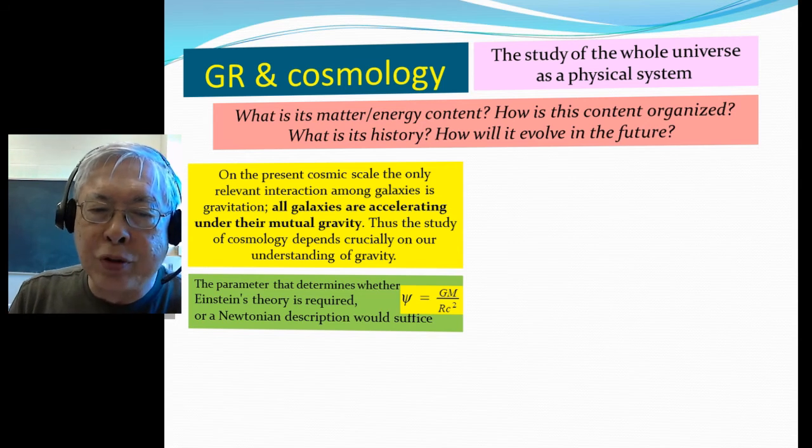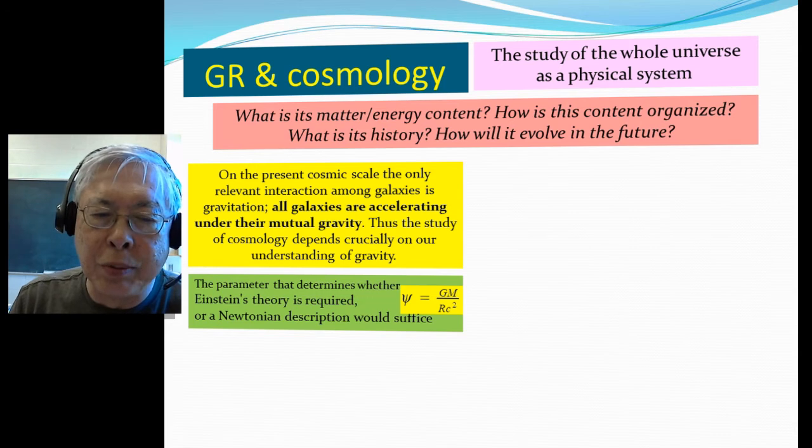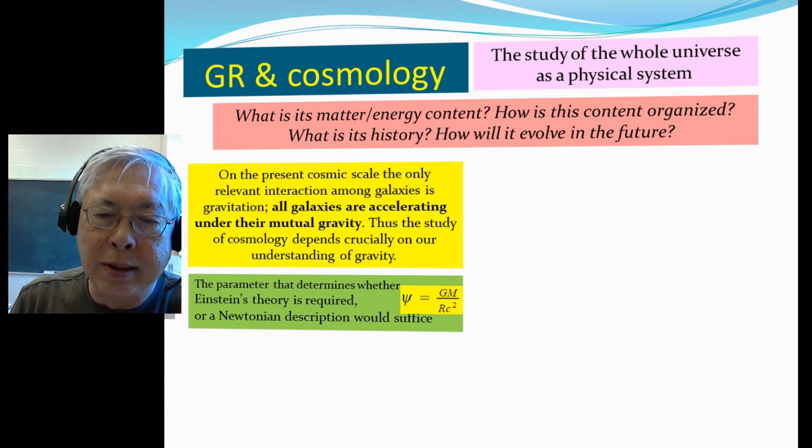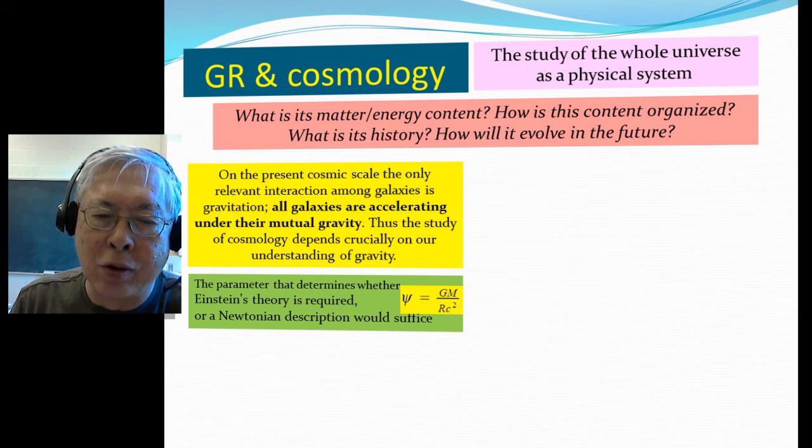And the parameter that determines whether Einstein's theory is required or a Newtonian description will suffice is this ratio of the Newton's constant multiplied by the mass of the system divided by the distance scale and the C squared. Okay, I call it xi.